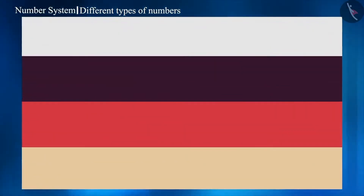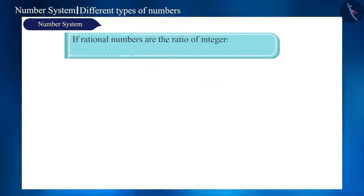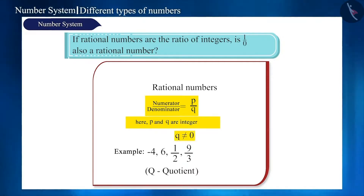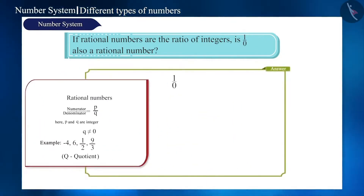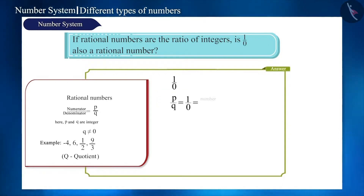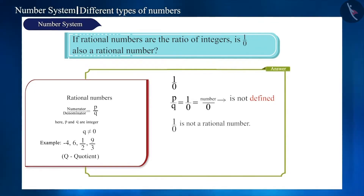Let's start with the first question. If rational numbers are the ratio of integers, is 1 by 0 also a rational number? By definition, a rational number is in the form p by q, where both p and q are integers and q is not 0. Dividing any integer by 0 is impossible. Therefore, in p by q where q is 0, it is called an undefined number. 1 by 0 is not a rational number — it is undefined.